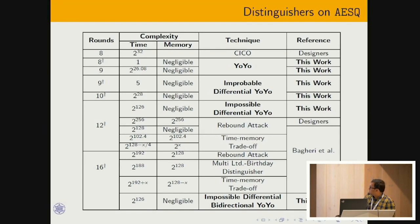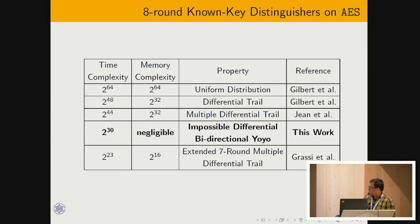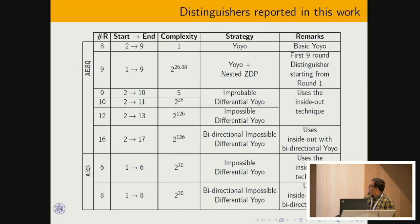Our work reports the first 9-round distinguishers for ASK starting from round 1, 8-round deterministic distinguishers, and 8-round non-key distinguishers for AES. In total, we have reported eight distinguishers: six related to ASK and two related to AES. All distinguishers use negligible memory.